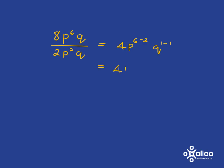So what you're going to get is 4p to the power of 4, and then q to the 1 minus 1 is q to the 0, which is just 1. And 4p to the 4 times 1 is just 4p to the 4.